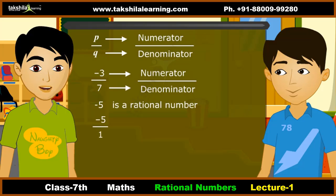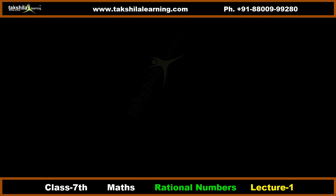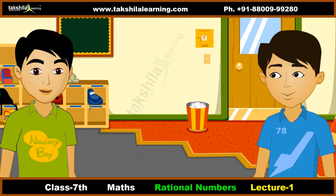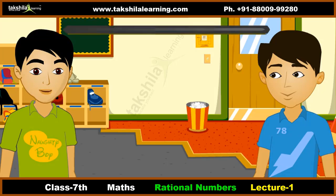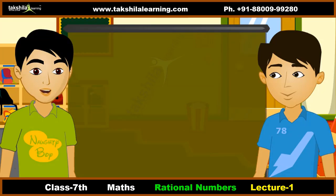Similarly, the integer 0 is a rational number because 0 can be written as 0 by 2 or 0 by 7, etc. Now, about equivalent rational numbers — look at these two rational numbers. Both rational numbers are equivalent.